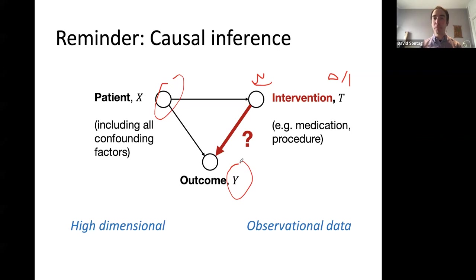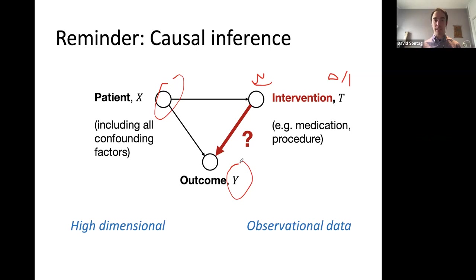What makes understanding the impact of the intervention on the outcome challenging is that we have to make that inference from observational data, where we don't have the ability — at least not in medicine — to make active interventions. The goal is to take data collected from the practice of medicine, where actions were taken, and use that to infer something about the causal effect. There are also randomized controlled trials, but the focus of today's lecture is using already-collected observational data to try to make these conclusions.